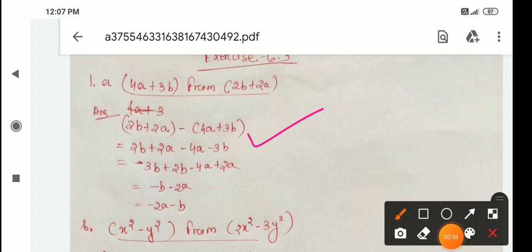Like this we write. Then we write the additive inverse of 4a is minus 4a and plus 3b is minus 3b. Then like terms we subtract: minus 3b plus 2b is minus b, and minus 4a plus 2a is minus 2a. That is minus 2a minus b. Clear?